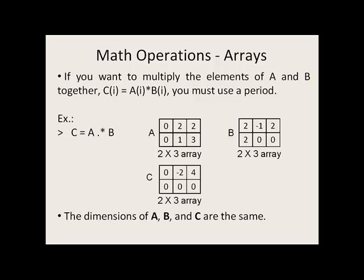If instead you want to just multiply each element of A and B together, you can use the period in front of the asterisk. So in this case, A will be a 2 by 3, B will be a 2 by 3, and the resulting array C will also be a 2 by 3.